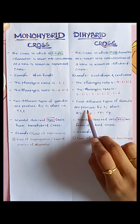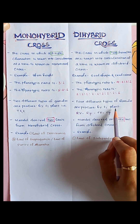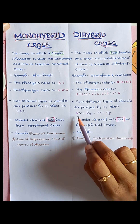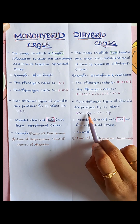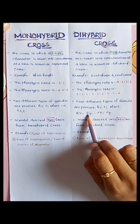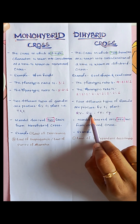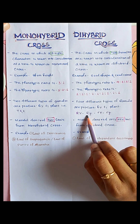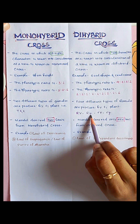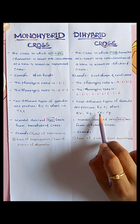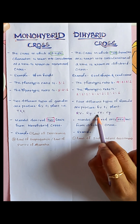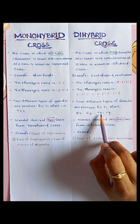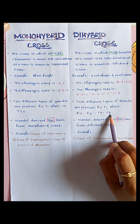Four different types of gametes are produced by the F1 plant in a dihybrid cross: capital R capital Y — seed shape round and color yellow; capital R small y — seed shape round and color green; small r capital Y — seed shape wrinkled and color yellow; small r small y — seed shape wrinkled and color green.